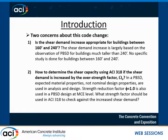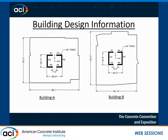Two questions naturally come up. One: is the shear demand increase appropriate for buildings between 160 feet and 240 feet? It's not currently required by ASCE 7-10, but only required by the City of Seattle. And second: how do you determine the shear capacity if you increase the shear by 2.5? In performance-based design, we often use a strength reduction factor of 1.0 and expected material properties, not specified material properties — that's also a huge difference. So how do you evaluate all the different parameters and have reasonable recommendations for buildings in that range?